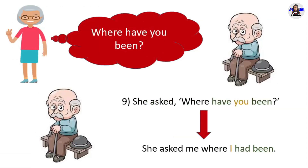Next example: 'Where have you been?' She asked 'Where have you been?' in direct speech. In reported speech, she asked me where I had been. This is a WH question, so we use the WH word before the reported question. 'Have been' in present perfect changes into 'had been' in past perfect. Pronoun 'you' changes into pronoun 'I.'